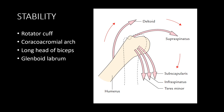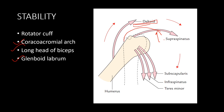Stability of the shoulder joint depends on four factors. First is the glenoid labrum, which deepens the shallow glenoid cavity. Second is the long head of the biceps, which helps hold the head of the humerus against the scapula and prevents upward displacement. Third is the coracoacromial arch, which prevents superior displacement. Fourth is the rotator cuff muscles, which compress the humeral head and prevent superior displacement.